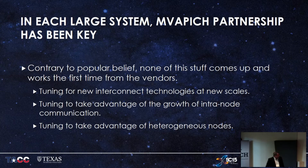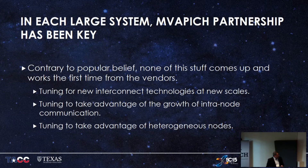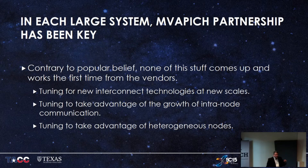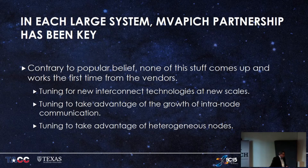Through every system we've done, especially the last few with closer partnership, it's been important to work on each new system. Every time we bring up a new interconnect or new type of node at scale, there's new tuning to do. None of this stuff ever works well the first time on a new platform. Lately, intranode communication is one of the biggest parts — we're doing 64 MPI tasks per node on Knights Landing, and we have heterogeneous nodes with GPUs and FPGAs.